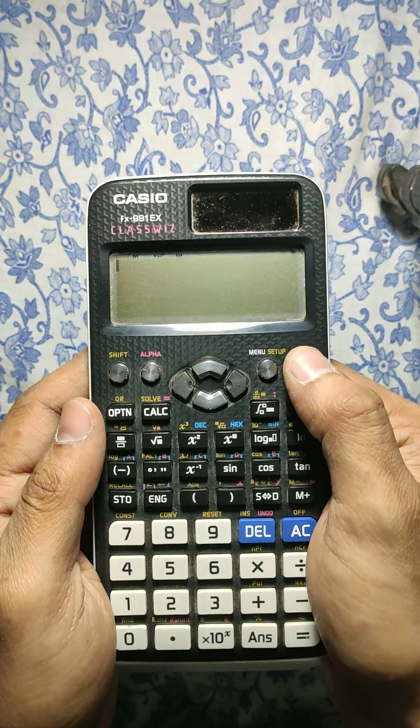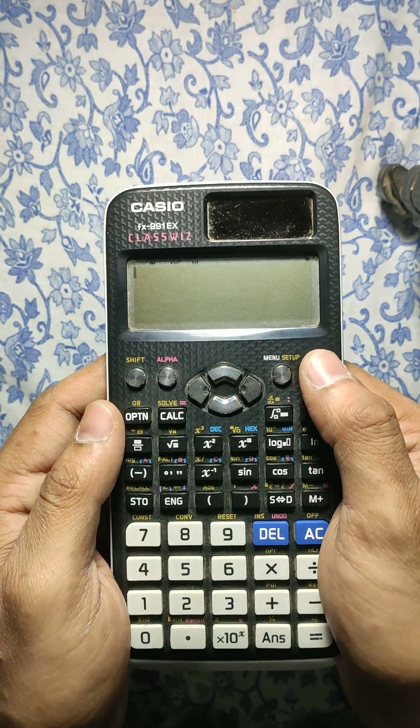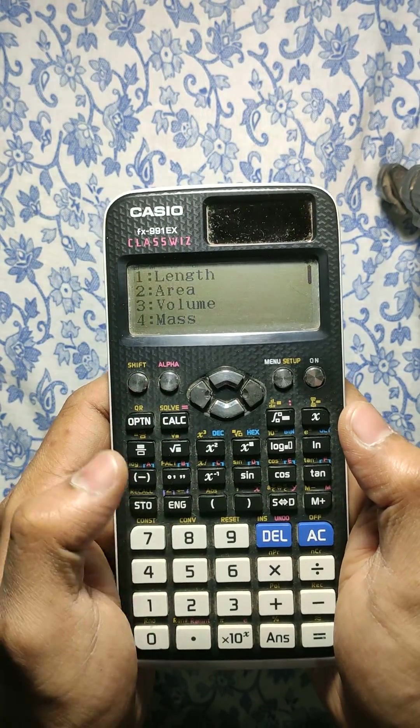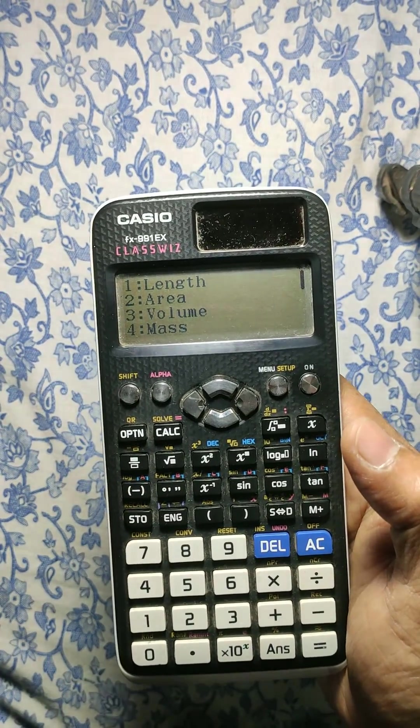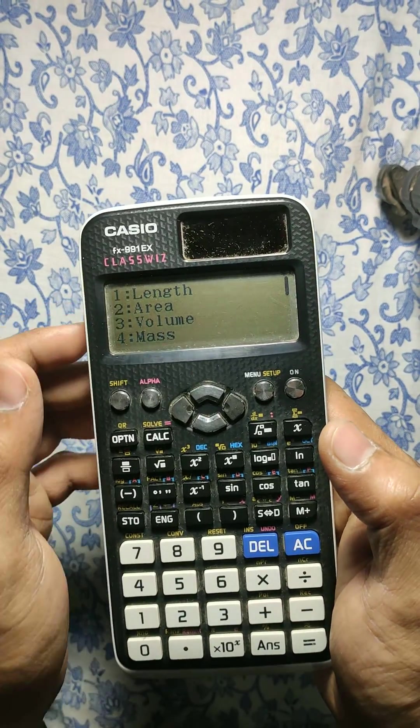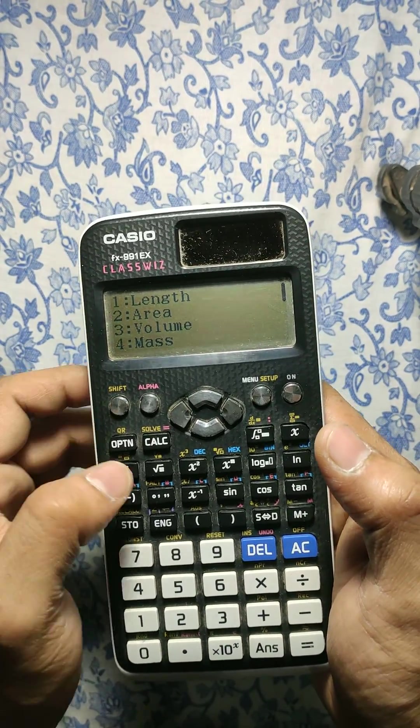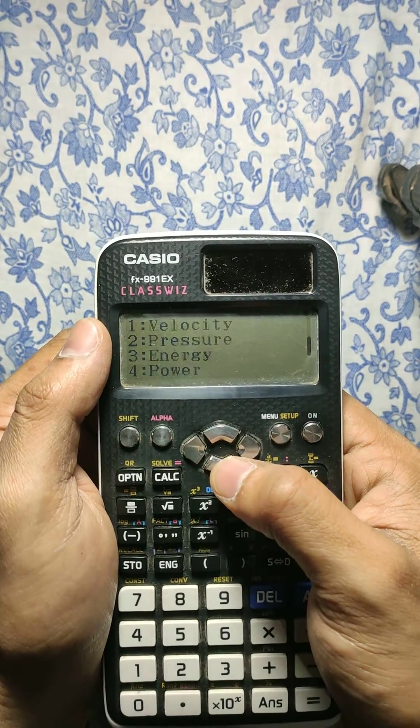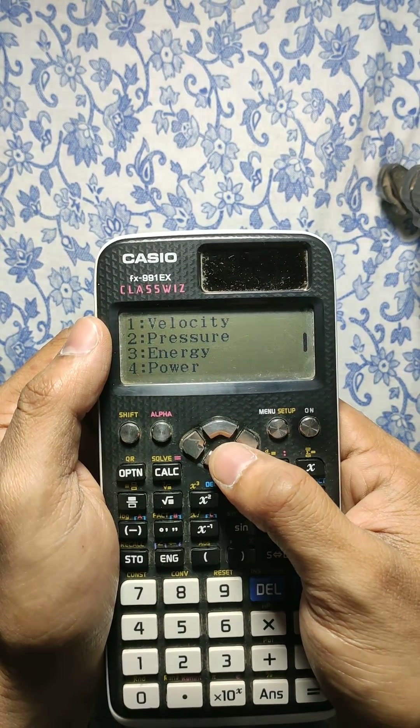So this is how you convert one quantity from another quantity. You press shift, then press convert, and then you are given a list of quantities. You can scroll down: length, area, volume, mass, velocity, pressure, energy, power, and temperature.